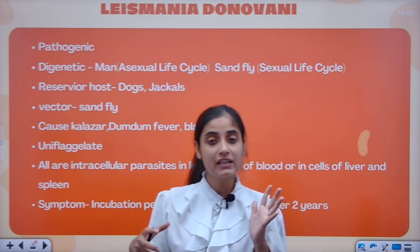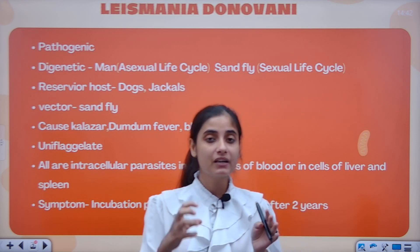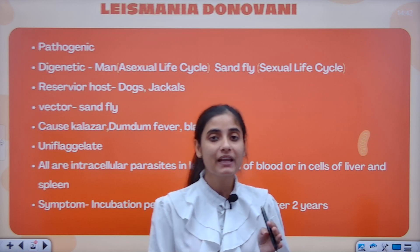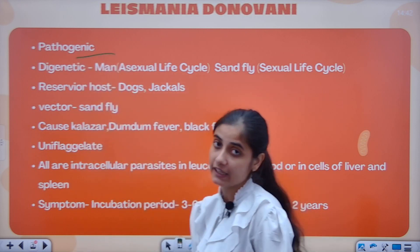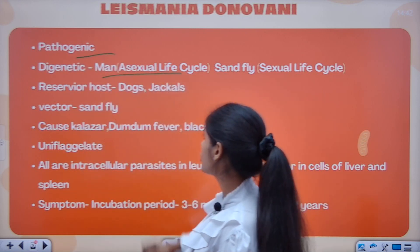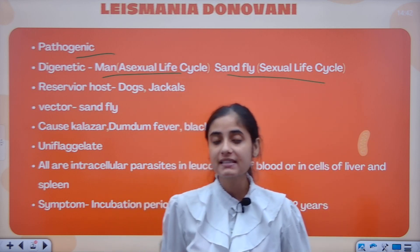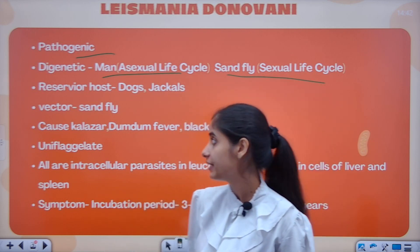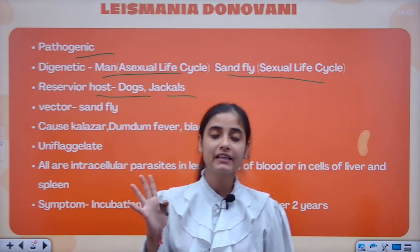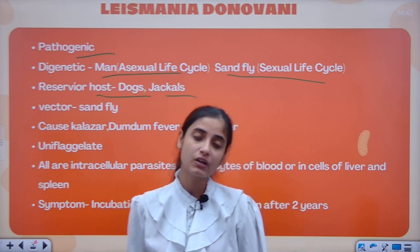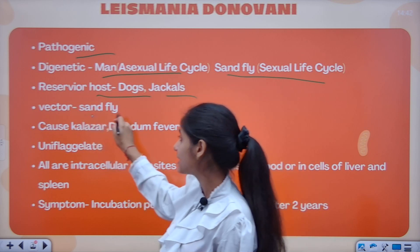Some of them are uniflagellates — Leishmania is also uniflagellate. In man, it attacks the blood cells, liver cells, and spleen. Leishmania is pathogenic, digenetic, and creates an asexual life cycle in man. The sandfly is the vector. The reservoir hosts are dogs and jackals.